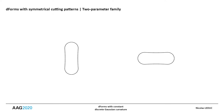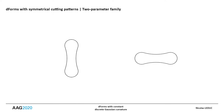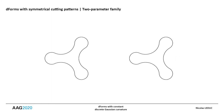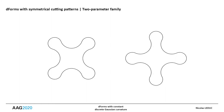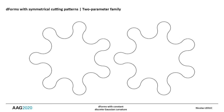The two identical cutting patterns to be assembled are defined by a first discrete parameter n, which characterizes the symmetry group to which the cutting patterns belong — or more simply, the number of branches.